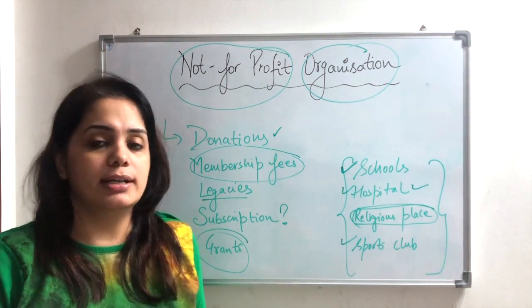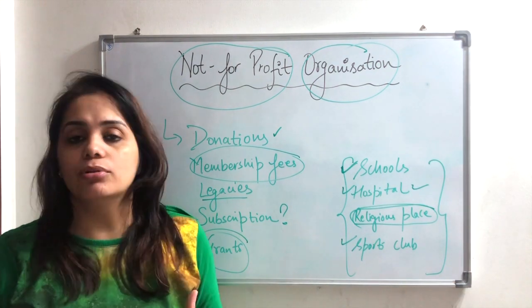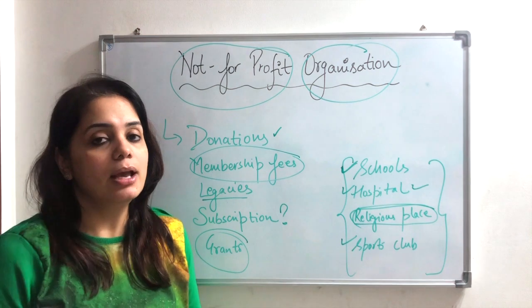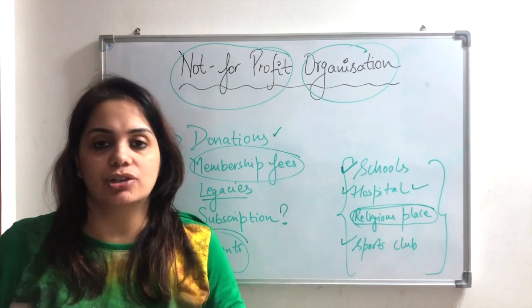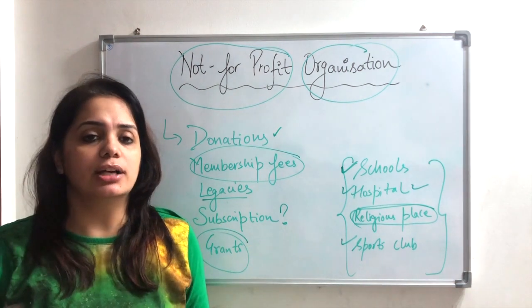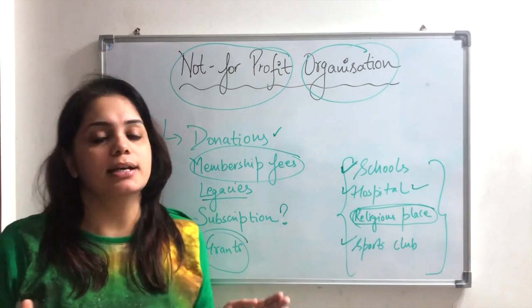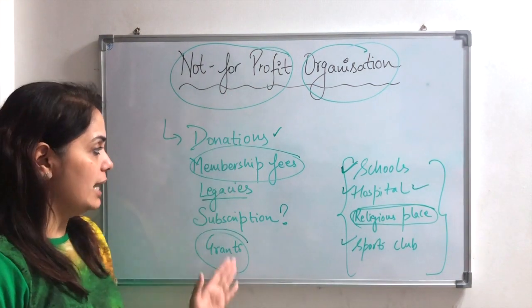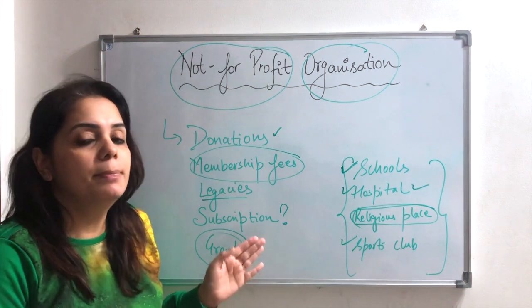So basically, what is a non-profit organization? It is an organization that is not focused on profit earning. The money it receives comes in the form of donations, grants, subscriptions, and legacies. I have now told you all the terms that will be used in NPO when we talk about receiving money.